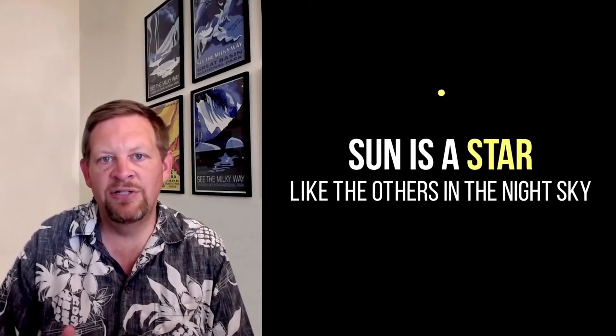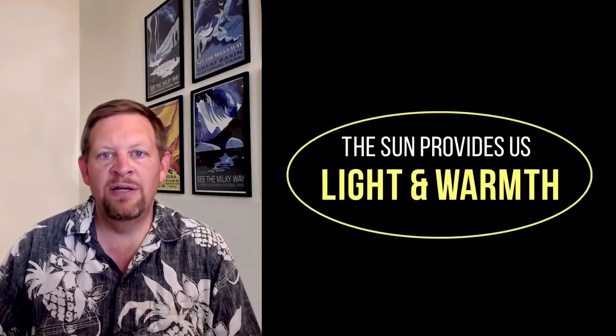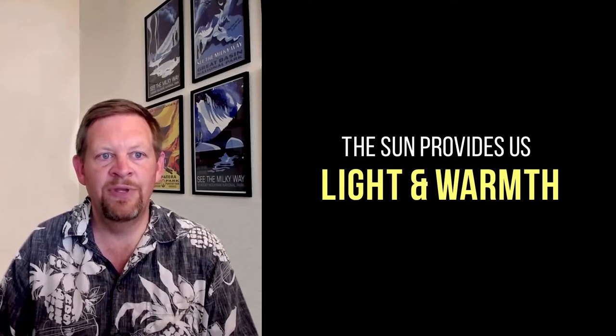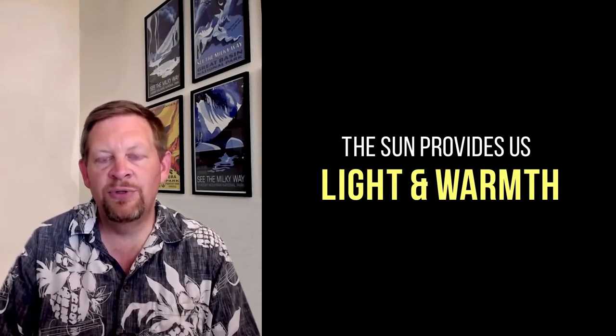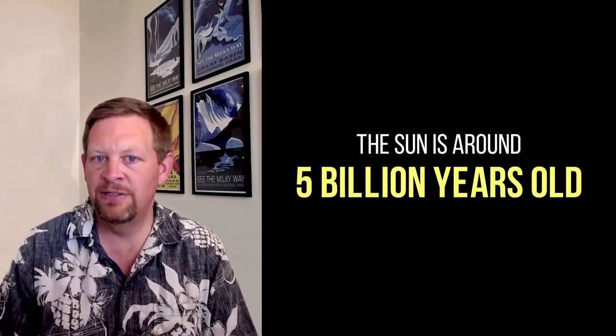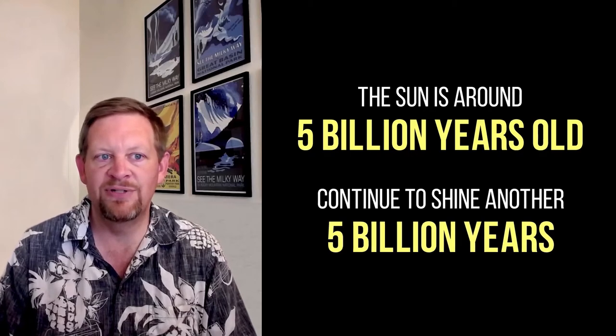Our Sun is a star just like all the others that we see in the night sky. The Sun provides us light and warmth, which is how life can exist here on planet Earth. Fortunately for us, our Sun will do this for quite a long time. We think our Sun is about 5 billion years old, and we think it will continue to shine for about another 5 billion years or so.